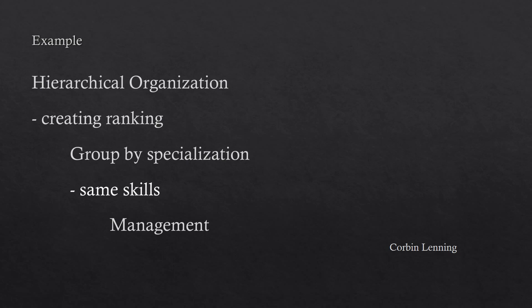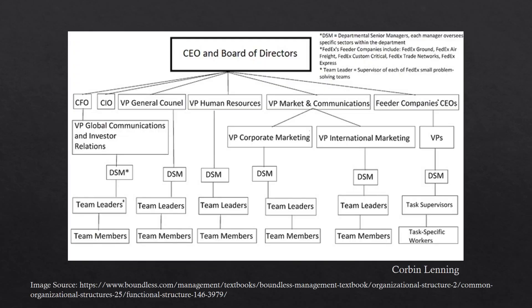Something important about management is that team members of one specific group will only report to the manager of their group and not another group. In this diagram, we can see what I've been talking about. The CEO has departments underneath it — human resources, corporate marketing, and so forth — and beneath them we have the department manager, team leaders, and team members. Team members of corporate marketing would not report to the team leaders of human resources.